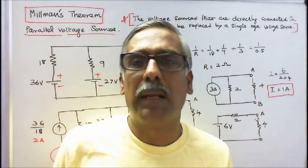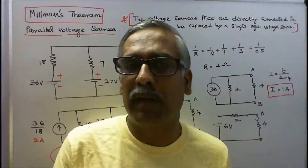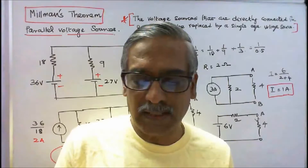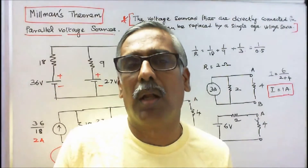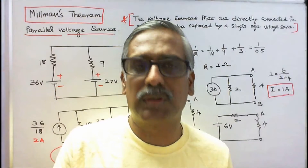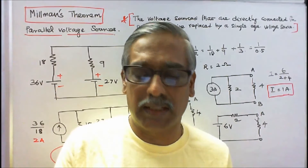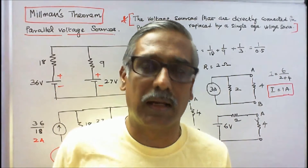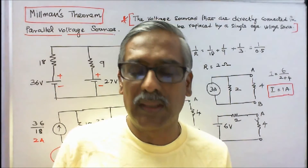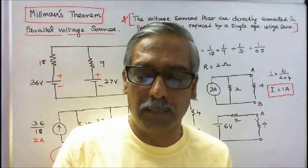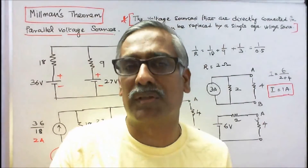Limitation of Millman's Theorem: This theorem is applicable only when the sources are connected directly in parallel without any resistance element between the sources.